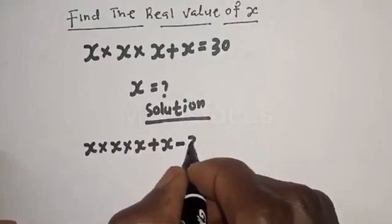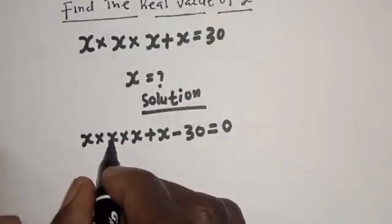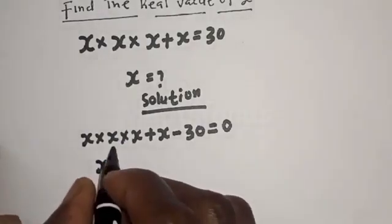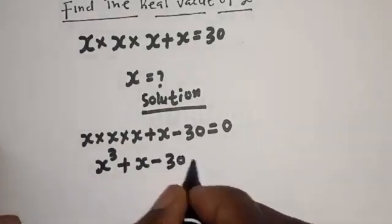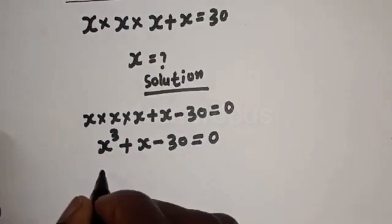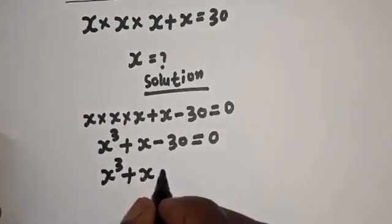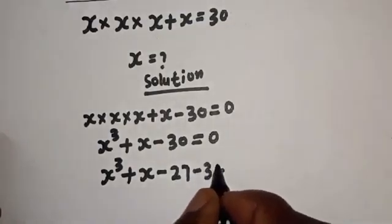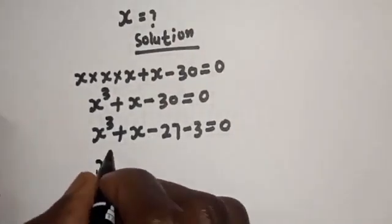Solution: we have s multiplied by s multiplied by s plus s, bringing everything to one side gives us s raised to power 3 plus s minus 30 is equal to 0.